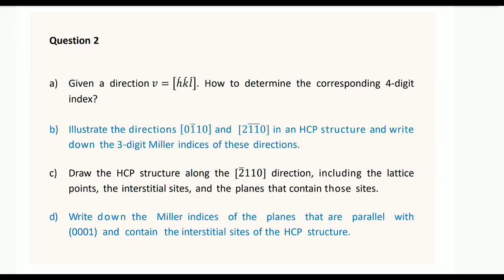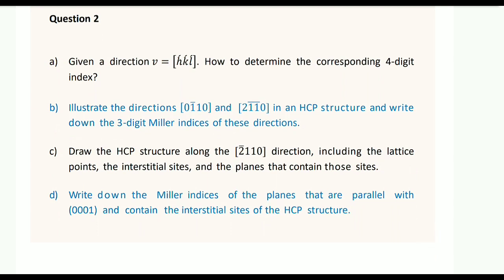Hello everyone, I hope you are learning well. In this video we are going to solve part B of this question. The solution to part A has already been uploaded and I will link that video in the comment section. Part B asks us to draw the directions [0 1̄ 1 0] and [2 1̄ 1̄ 0] in the HCP structure and write down the three-digit Miller indices of these directions.